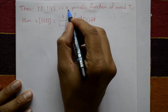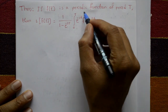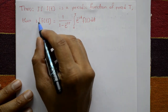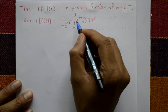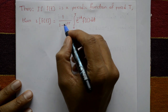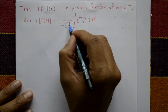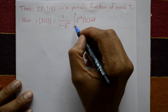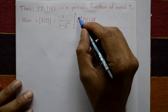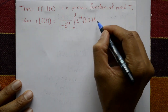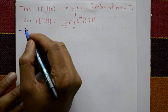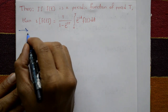Theorem: If f(t) is a periodic function of period T, then the Laplace of f(t) is equal to 1 upon (1 minus e raised to minus sT) times the integration of 0 to T of e to the power minus st times f(t) with respect to t. Now we proceed to prove this.